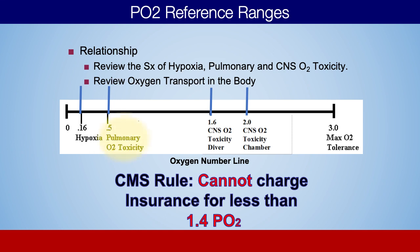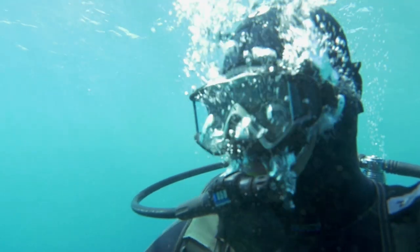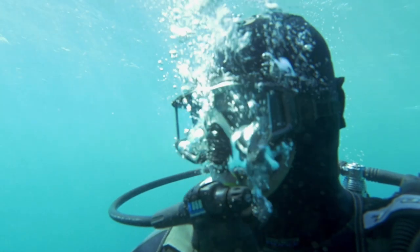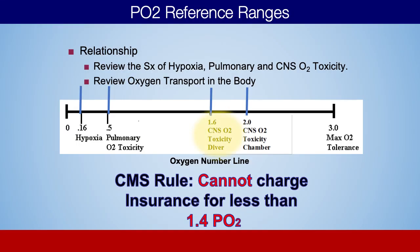Moving along the line, at a PO2 of 0.5, that becomes the beginning of where we would start to track pulmonary oxygen toxicity. Skipping along further, at a PO2 of 1.6, central nervous system oxygen toxicity can occur. There's a difference between CNS toxicity in a scuba diver versus a clinical patient in a hyperbaric chamber. The scuba diver has a lower threshold because they're exercising and producing more CO2, which increases the likelihood of becoming oxygen toxic. So the threshold is PO2 1.6 for the diver and PO2 2.0 or above for the clinical patient.